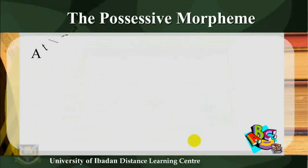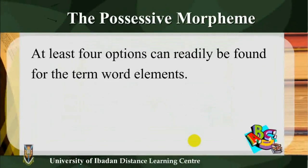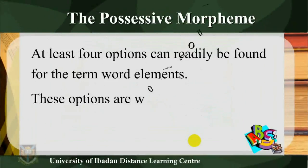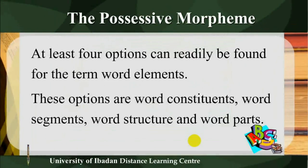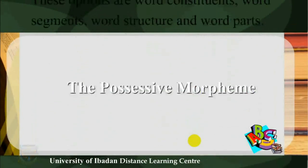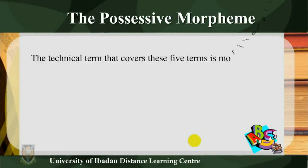At least four options can readily be found for the term 'word elements.' These options are: word constituents, word segments, word structure, and word paths. The technical term that covers these is morphology.